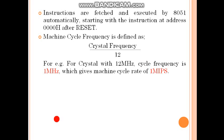Machine cycle frequency is defined as crystal frequency divided by 12. For example, if the crystal frequency is 12 MHz, then machine cycle frequency is 1 MHz because 12 divided by 12 equals 1 MHz, which gives the machine cycle rate of 1 MHz.